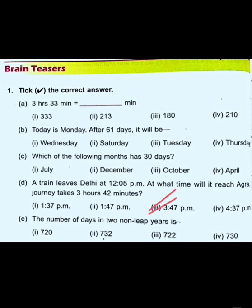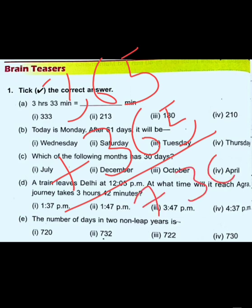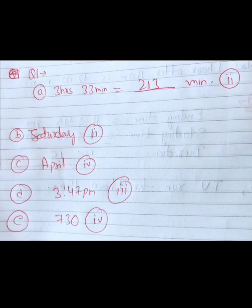For part E, the number of days in two non-leap years: one non-leap year has 365 days, plus another 365 days for the second year. Adding them gives 730 days. So the correct answer is option number four, which is 730. To summarize: part A is 213 minutes, part B is Saturday, part C is April, part D is 3:47, and part E is 730.